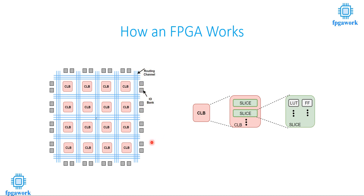Going further into FPGA components: if we go deeper into a CLB, a CLB has basically slices. More than one slice makes a CLB. If we go further into a slice, a slice has a LUT and a flip-flop. Flip-flops are memory units, and the LUT is basically the main unit on which an FPGA works. Any kind of logic in an FPGA is implemented using LUTs.